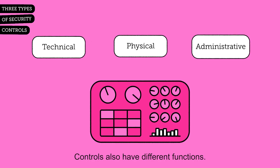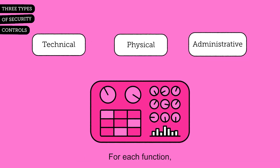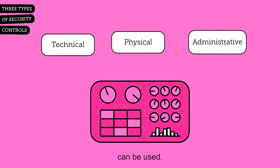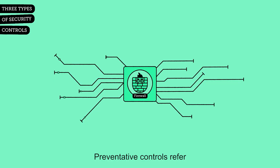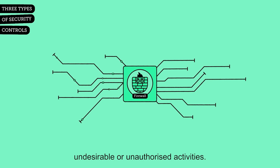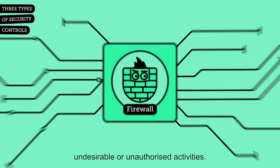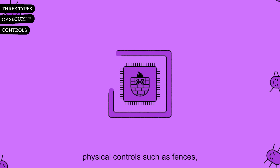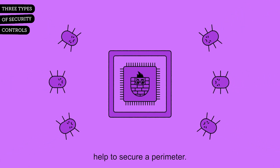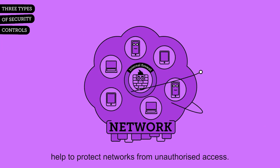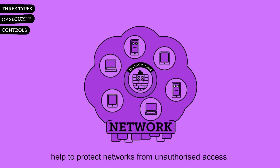Controls also have different functions, and for each function the different types of controls can be used. Preventative controls refer to any security mechanism intended to prevent undesirable or unauthorized activities. For example, physical controls such as fences help to secure a perimeter, and technical controls such as firewalls help to protect networks from unauthorized access.